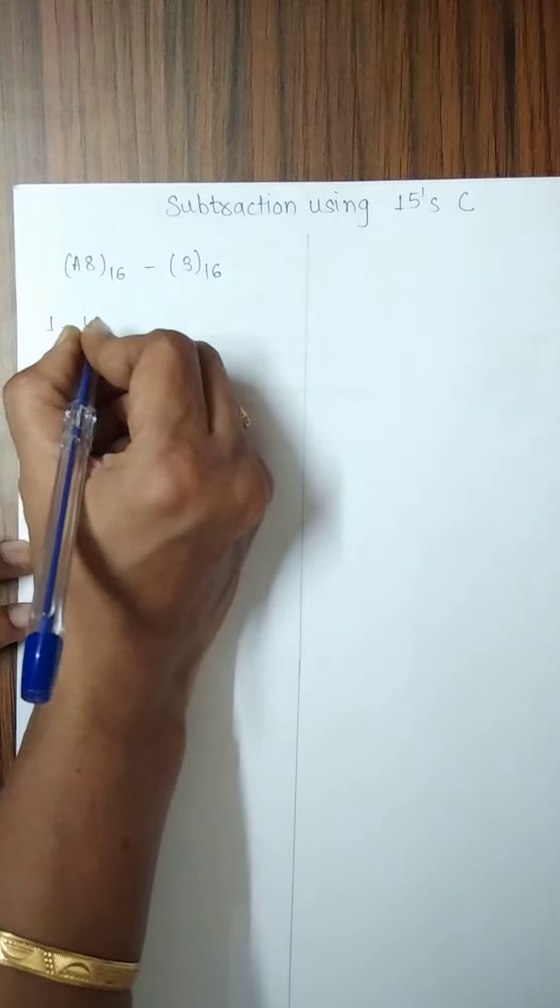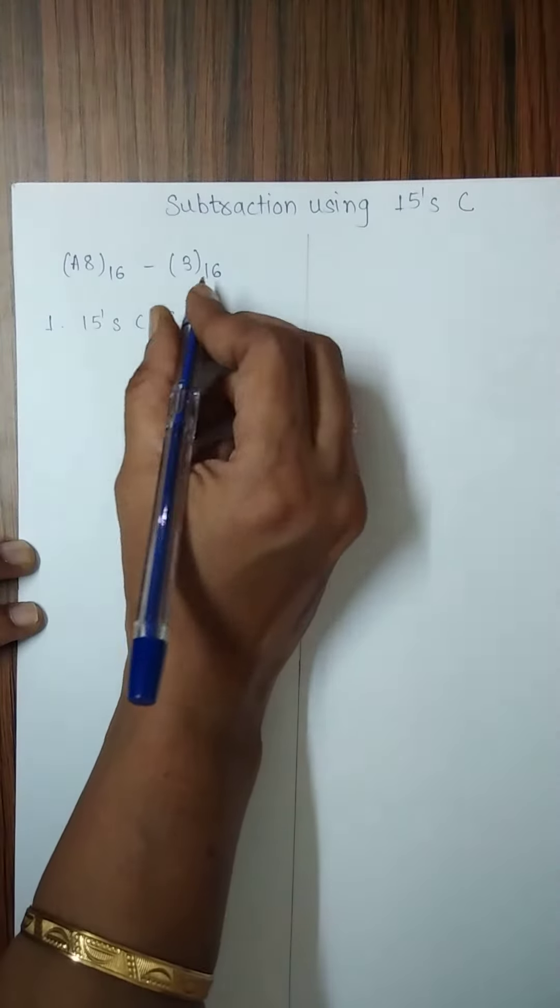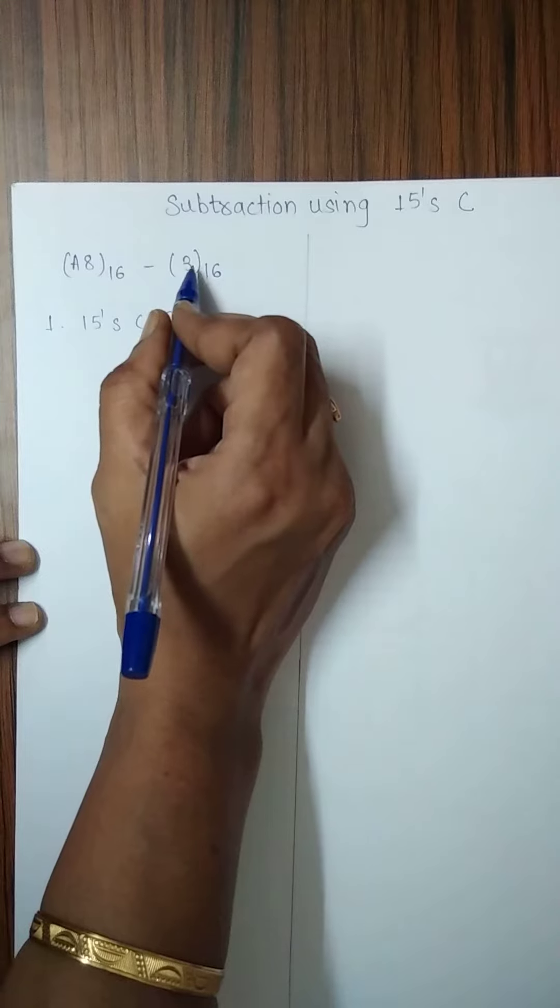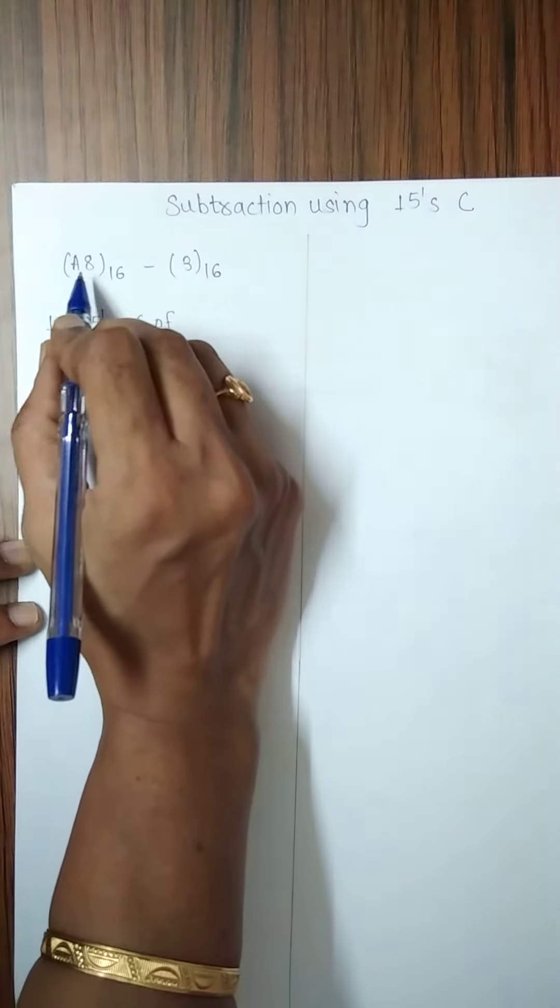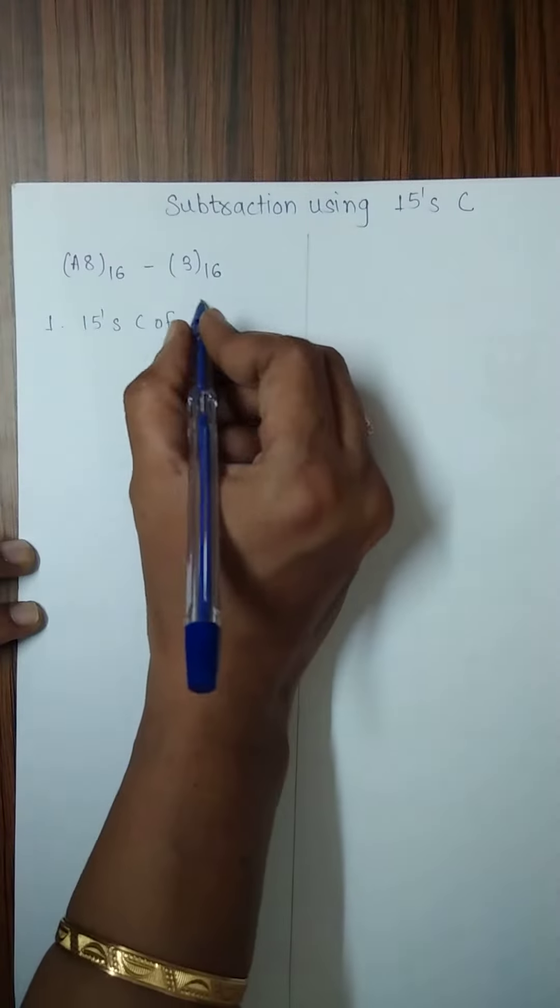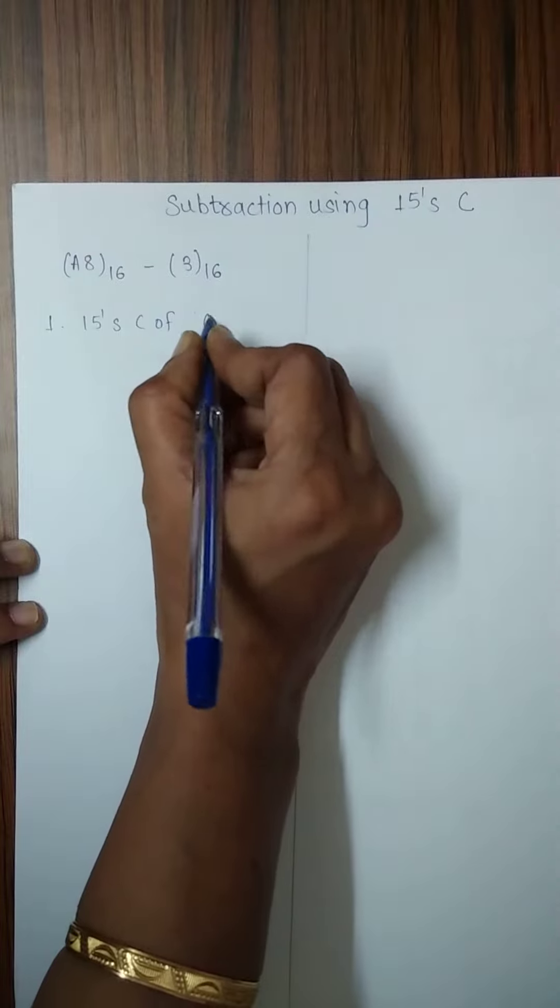Now first step is to find out the 15's complement of the subtrahend which is 3. In order to make this 3 of length 2 digits as that of the minuend, we will precede its representation by 0.